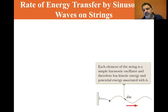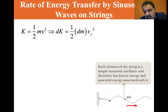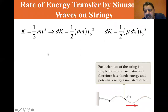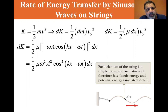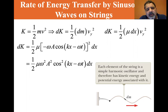The kinetic energy is one-half mv squared. If we look at a small portion of mass dm, then dK equals one-half dm times v_y squared. The mass dm is the linear mass density μ times dx, so dK equals one-half μ dx times v_y squared. Substituting v_y, we get dK equals one-half μ times (−ωA cos(kx − ωt))² dx.